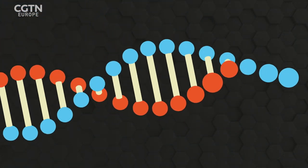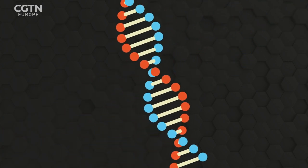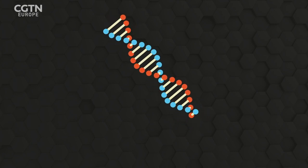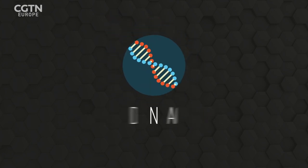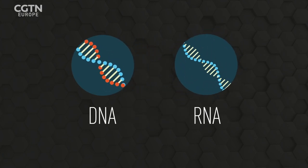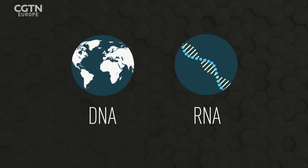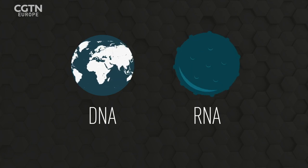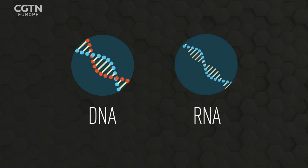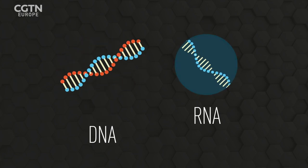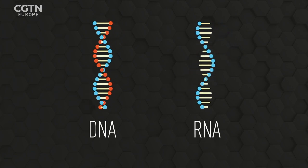Nucleic acids are large molecular structures known as biopolymers that form the essential components of life. They are split into two types: deoxyribonucleic acid, DNA, and ribonucleic acid, RNA. Every living thing on our planet is DNA-based, with the exception of viruses, which can be RNA-based. And some argue that viruses aren't living at all. So what are the roles of DNA and RNA, how are they different, and how do they interact?